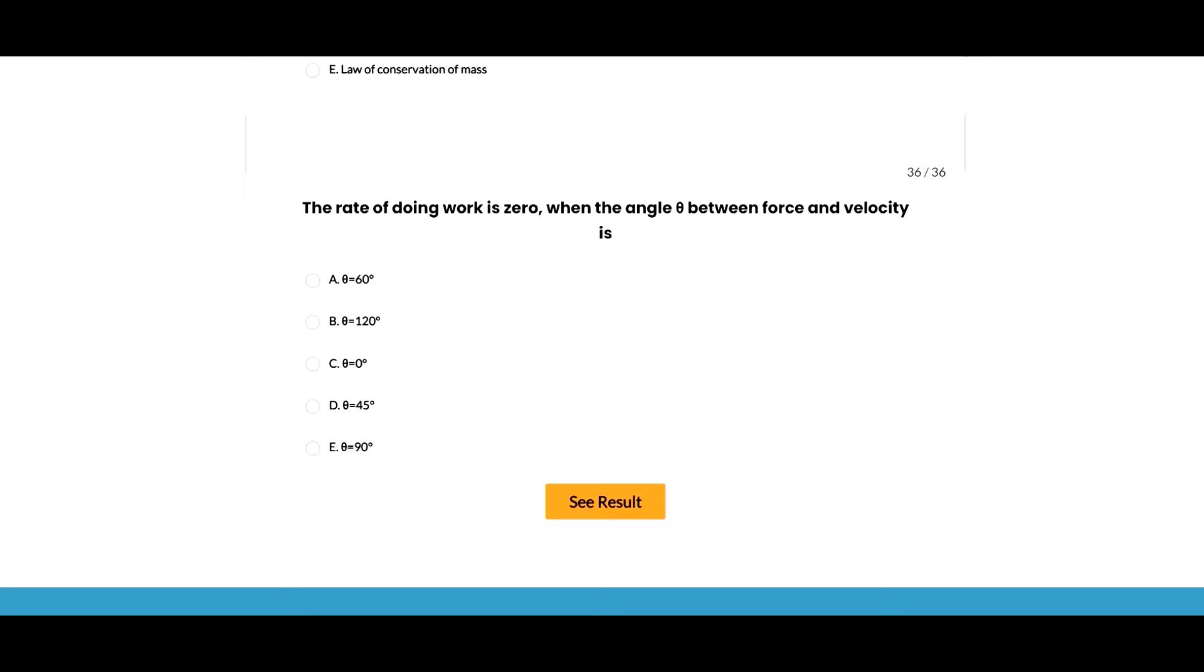Last question: the rate of doing work is zero when the angle theta between force and displacement will be given as theta equals 90 degrees. Thanks for watching this video. Please share this lecture with your classmates and friends so that they also benefit from it. Don't forget to like and subscribe. You can also use the playlist of the channel to learn more.